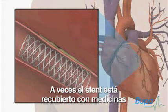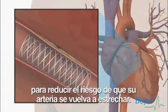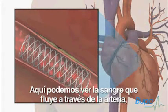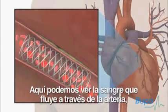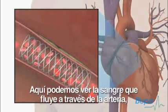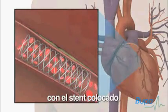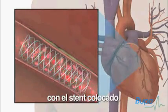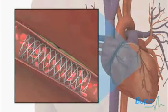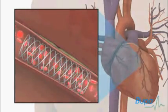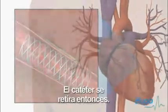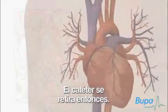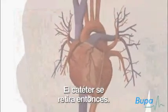Sometimes the stent is coated with medicines to reduce the risk of your artery narrowing again. Here we show the blood flowing through the artery with the stent in place. The catheter is then removed.